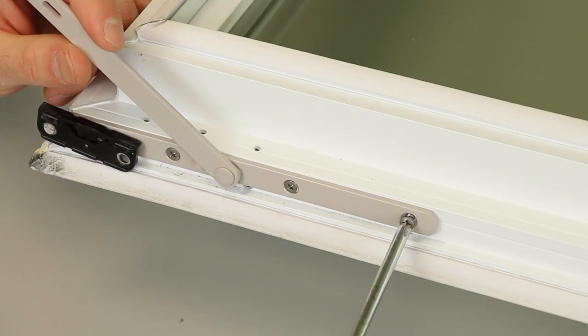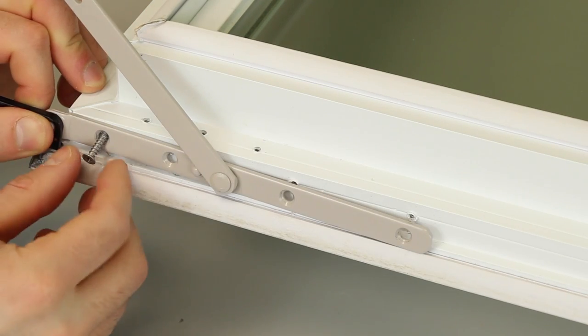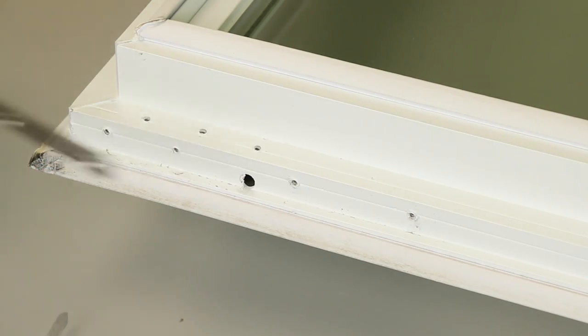Then, remove the old hinges from the bottom and top of your sash, and replace them with your new ones.